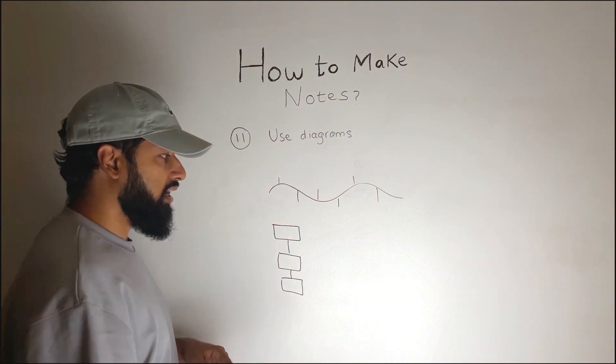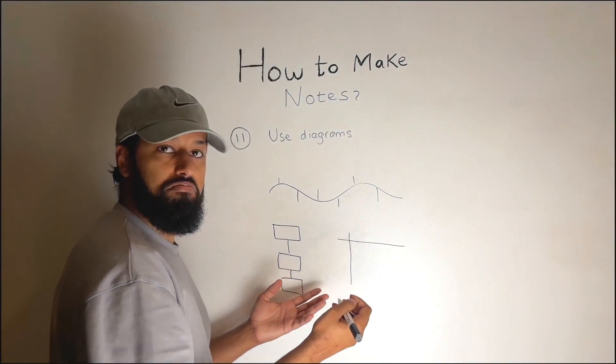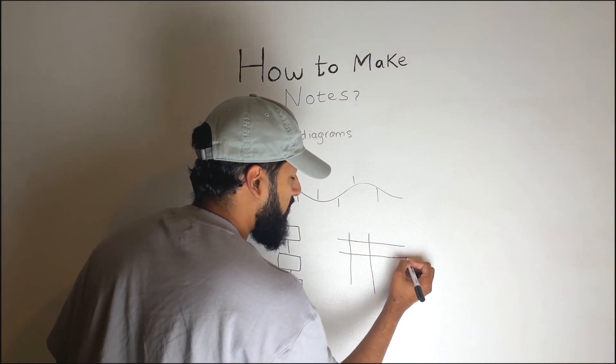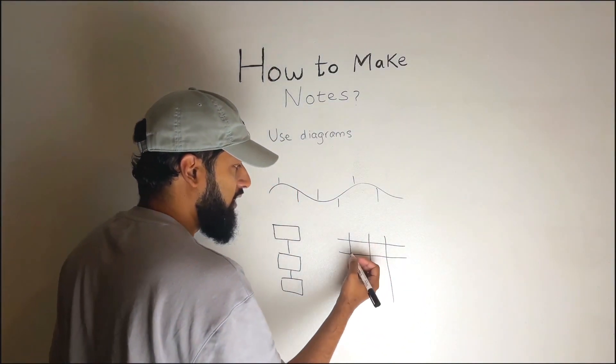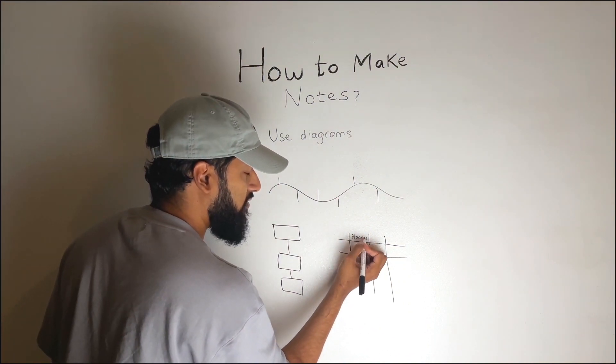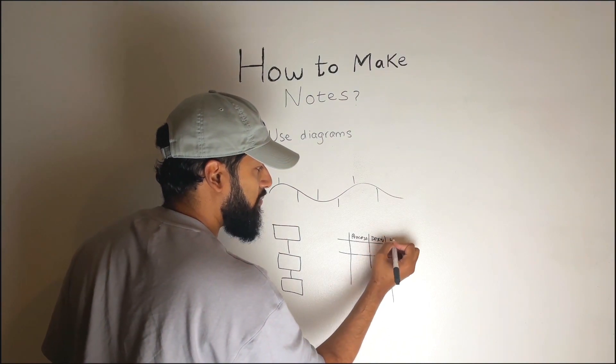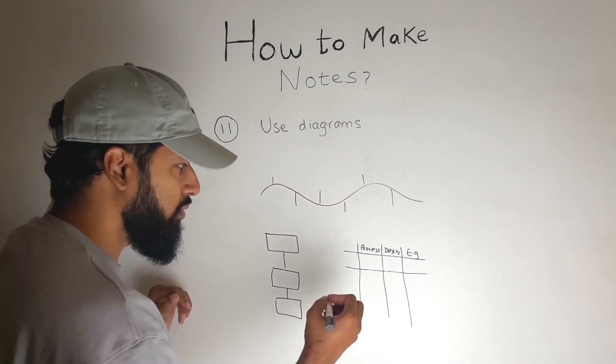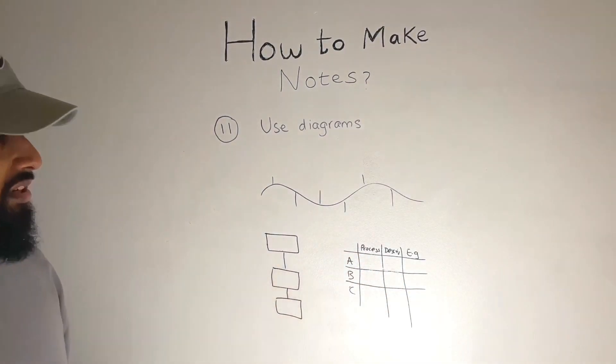Another tool that you could use is a table. Often not used when people are making notes, but say for example you are comparing multiple things. I don't know, you are describing the processes of separation in chemistry. Then you might have for example the process here, you might have the description of it, you might have an example of it here and so on, depending on what it is that you're doing. Then it really makes it easy for you to compare these different things, so a table is another good tool that you can use.